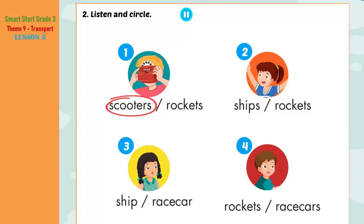Two. Can I try? Sure. What can you see, Lucy? I can see three blue rockets. Three. Your turn, Mai. What can you see? I can see one grey ship.